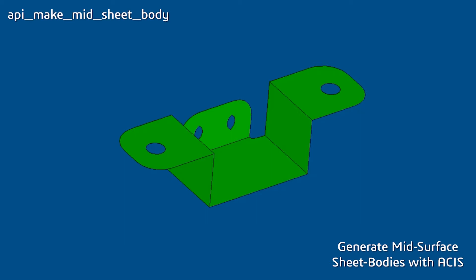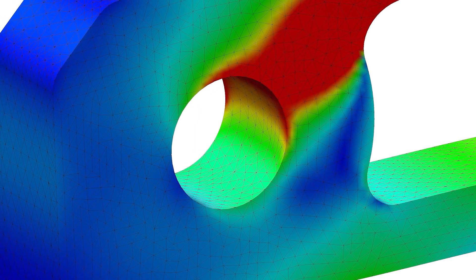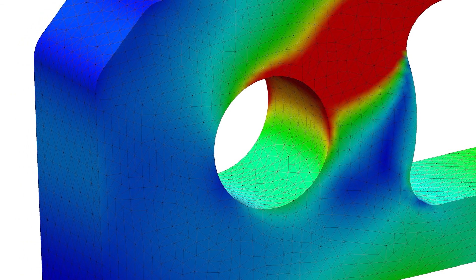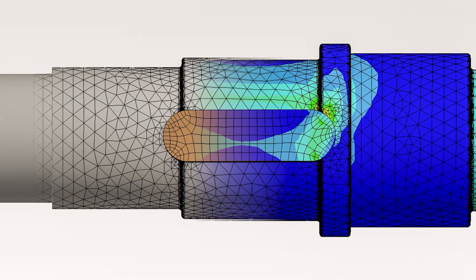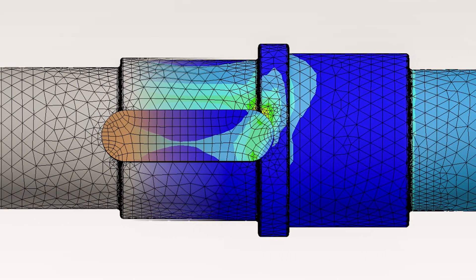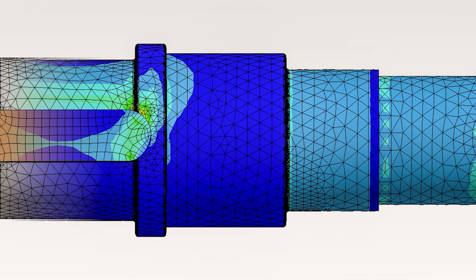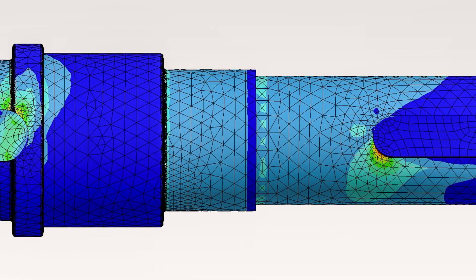But why would there be a need to create a mid-surface sheet body from opposite faces of a thin-walled solid body? A good example is a finite element workflow in a computer-aided engineering application. For some models with part geometries comprised of thin walls, shell elements instead of solid elements suffice for a finite element simulation, both in terms of solution accuracy and in terms of number of elements.